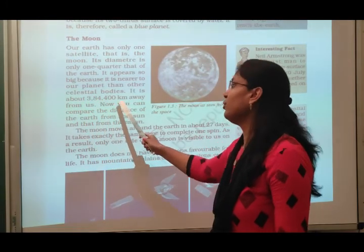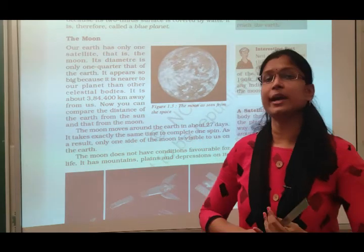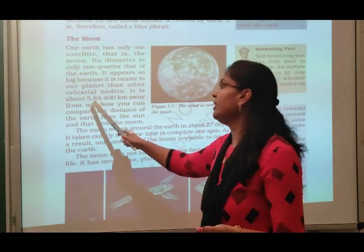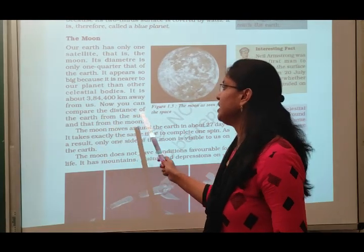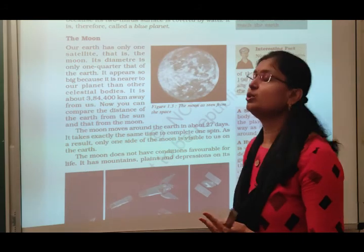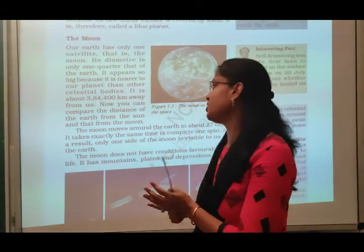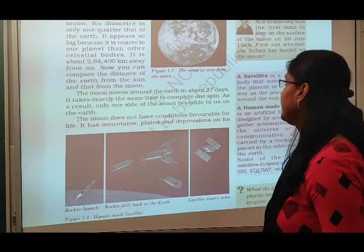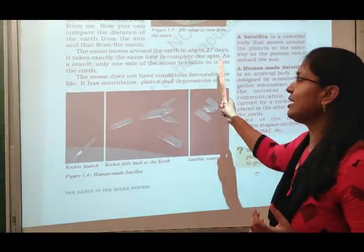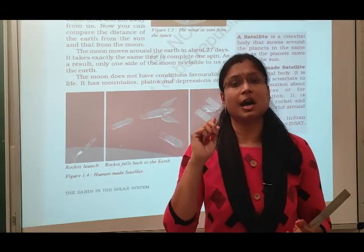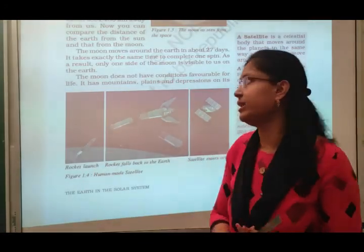The moon is about 384,400 km away from us. We can compare the distance of the earth from the sun and the distance from the moon. The moon moves around the earth in about 27 days — it takes 27 days to complete one round of the earth.